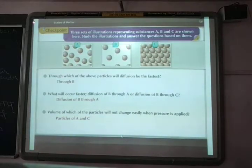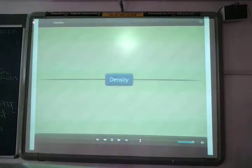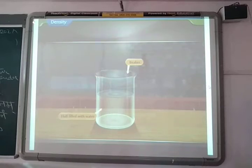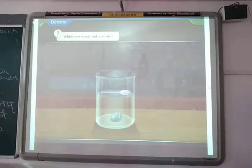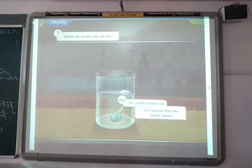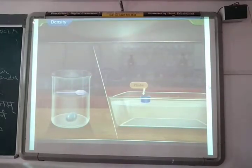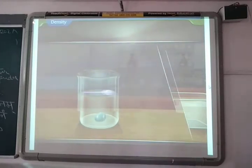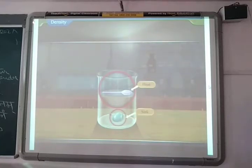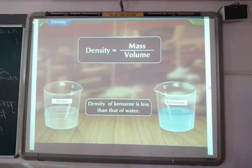Density. Take a beaker half filled with water. Put a marble and a plastic spoon in it. Which one would sink and why? The marble would sink because it is heavier than a plastic spoon. Substances float or sink in water due to differences in their densities. Let us understand the concept of density. Density is the ratio of mass to volume.